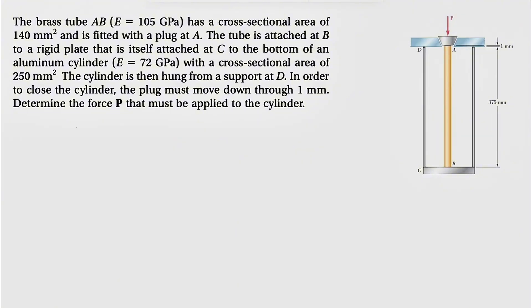We have two things in here. First, we have the aluminum tube that needs to be deflected by 1 mm. We also have the tube AB, which is made of brass. So our total deflection δ would be the deflection of AB plus the deflection of CD. And we know this has to be equal to 1 mm, which is the total deflection or 0.001 meter.